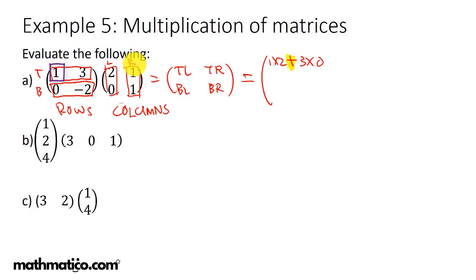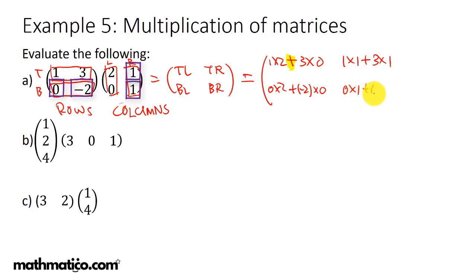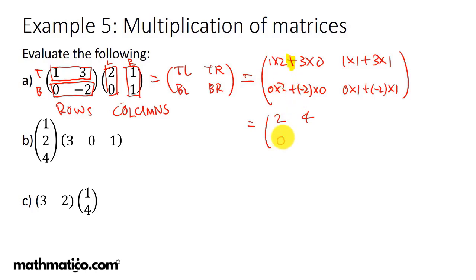For the top-right entry: one times one plus three times one. For the bottom-left entry: zero times two plus negative two times zero. Finally, the bottom row times the right column: zero times one plus negative two times one. Simplifying: two plus zero is 2, one plus three is 4, zero plus zero is 0, and zero plus negative two is negative 2. The result is a 2×2 matrix.